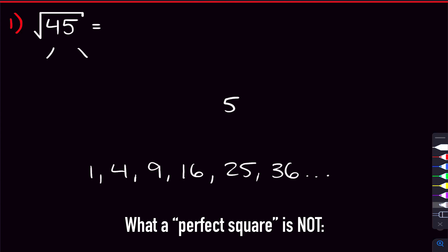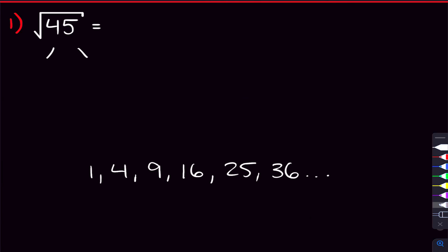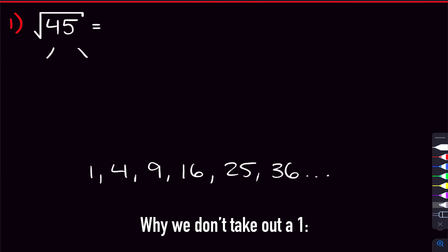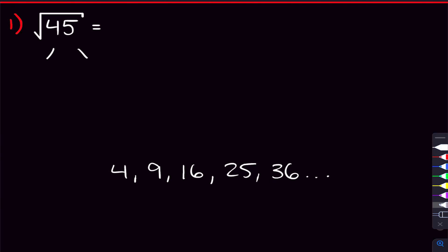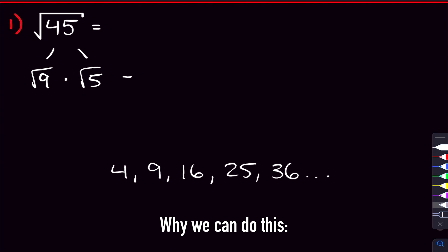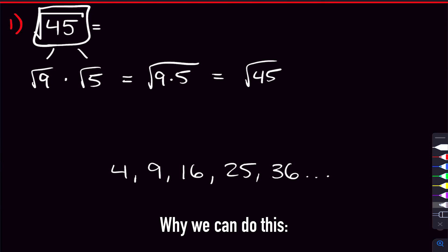So what perfect square can we take out of 45? It wouldn't make sense to take out 1 — of course we can take 1 from any square root, but we'd just end up back with the square root of 45. Does 4 go into 45? No, because 45 is an odd number. But 9 — yeah, that'll work, because the square root of 9 times the square root of 5 would be the square root of 45. A property of square roots is that if you multiply two square roots, you multiply what's underneath them. So the square root of 9 times the square root of 5 equals the square root of 45, meaning we're not actually changing anything.